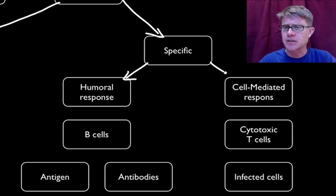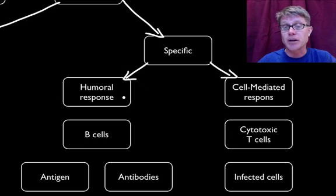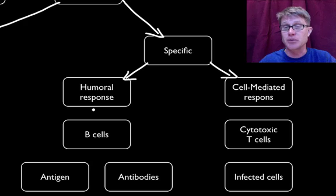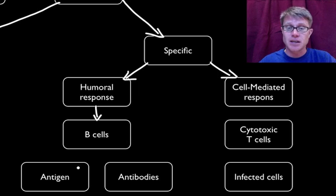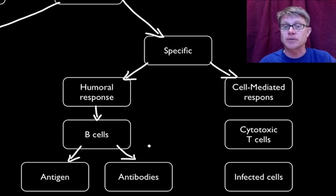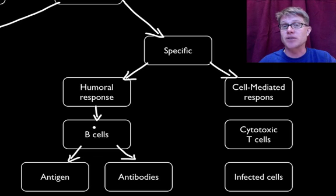We break our specific defense into two different types. We have humoral response, which is found in the humors or liquids of your body — for example in your blood or in your lymphatic material. It's generally governed by B lymphocytes, and what they do is produce antibodies to mark antigens for destruction. We can hold on to memory B cells for the rest of our life, and that's why you can never get chicken pox again.